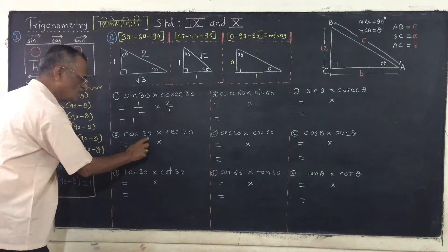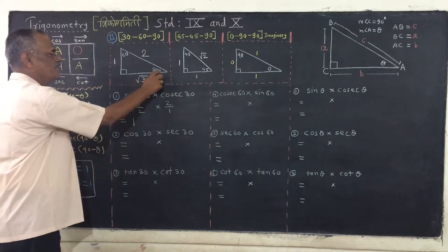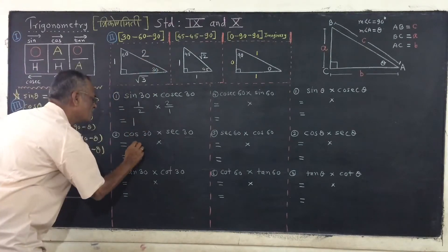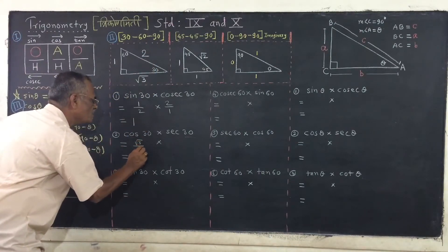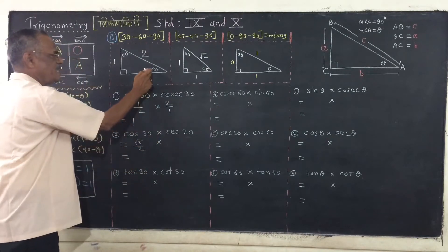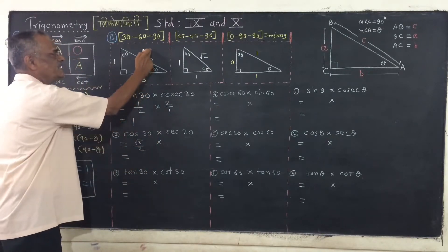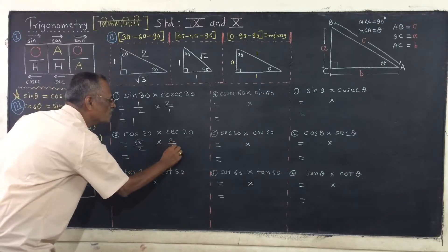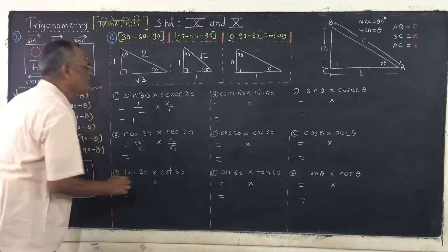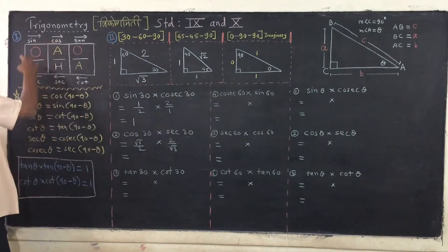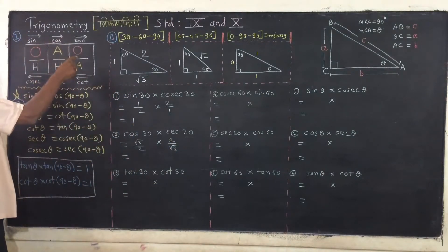Similarly, cosine of 30 is root 3 upon 2, into sec of 30, which is 2 upon root 3. You are using this table again and again.